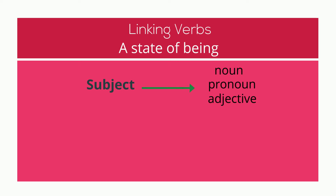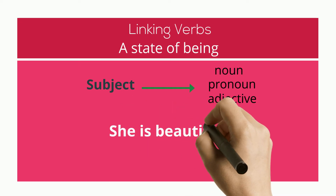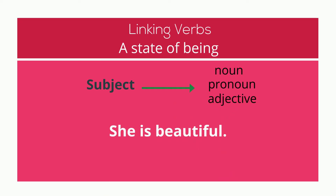For example: she is beautiful. "Is" is a linking verb. It connects the subject, "she," to the adjective, "beautiful."